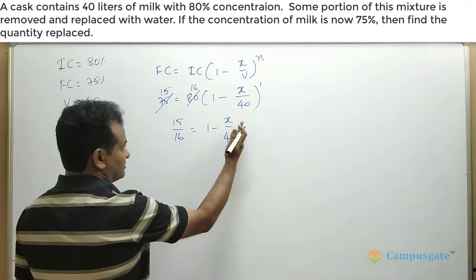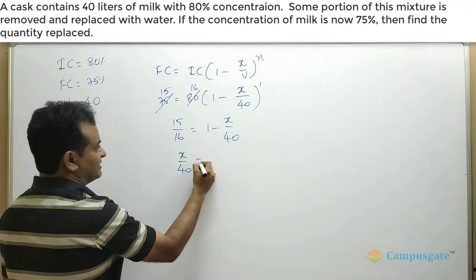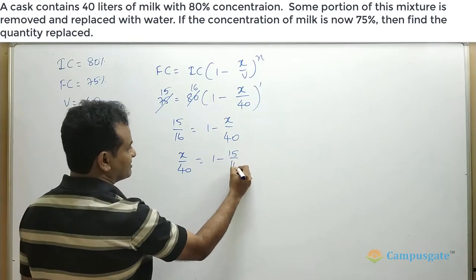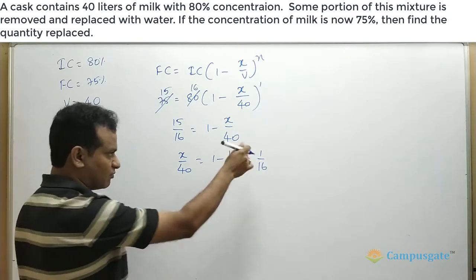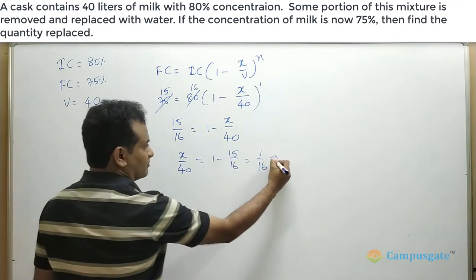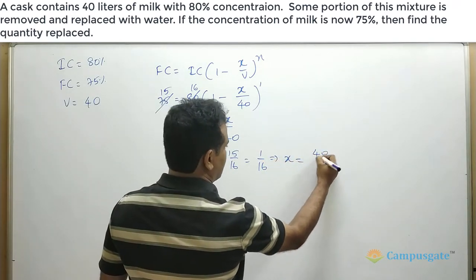Now just bring this x by 40 to this side and send this 15 by 16 to other side which will give you 1 by 16. 16 into 1 minus 15 will give you 1 by 16. Therefore x equal to 40 by 16.